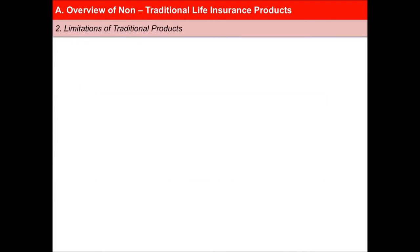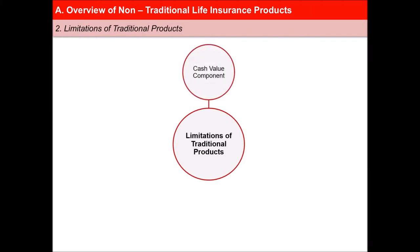There are some limitations of traditional products. First, the savings or cash value component is not well defined. It is determined by assumptions about mortality, interest rates, expenses and other parameters set by the life insurer, which can be arbitrary.